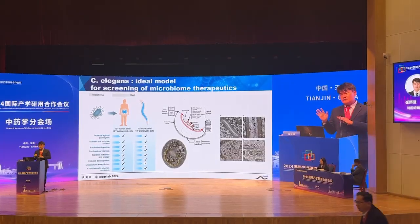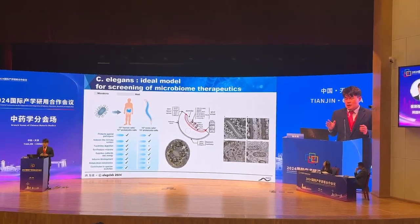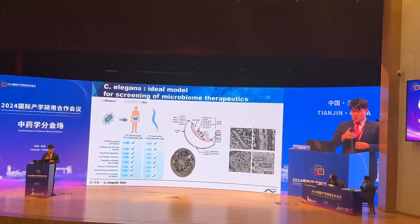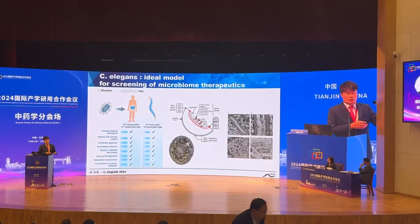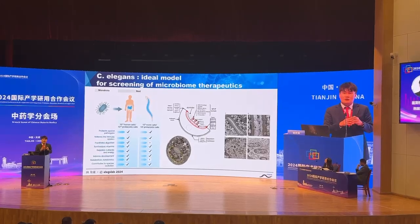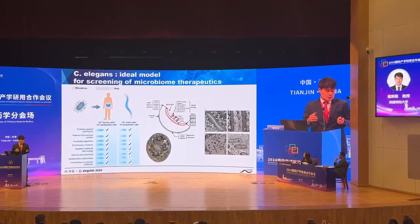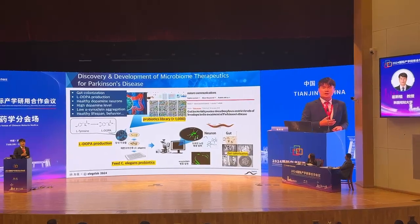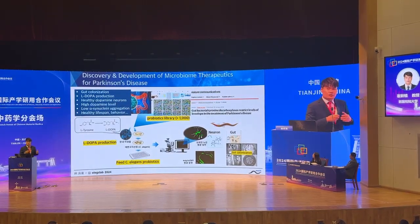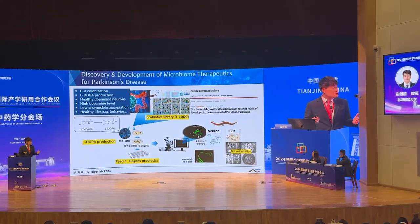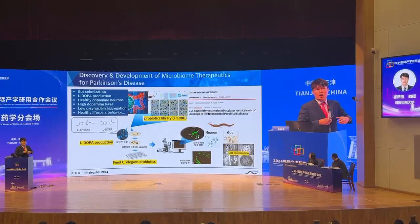We are focusing on microbiome therapy because the C. elegans model has a similar digestion system to humans. When you introduce a microorganism into the C. elegans body, it can colonize the intestine and change the microbiome. We screened microbiome therapeutics targeted for Parkinson's disease from over 1,000 microbiome cell libraries, looking for microorganisms that produce levodopa.